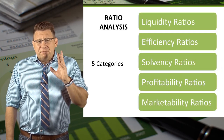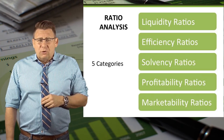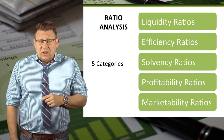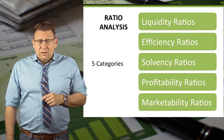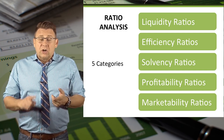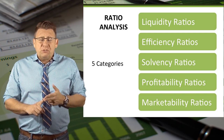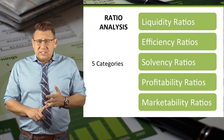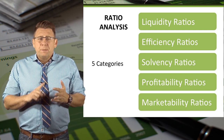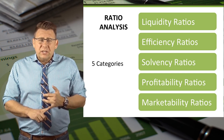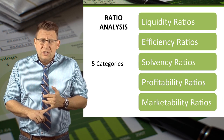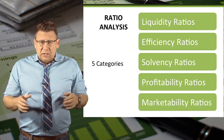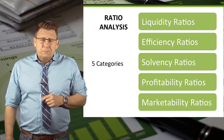Generally, there are five categories that all ratios fall into. The categories are liquidity ratios, efficiency ratios, solvency ratios, profitability ratios, and marketability ratios.